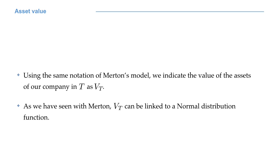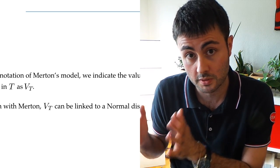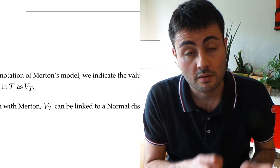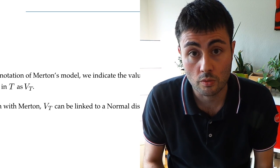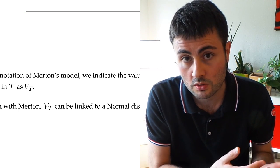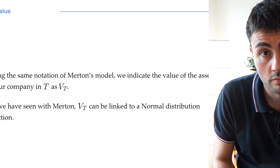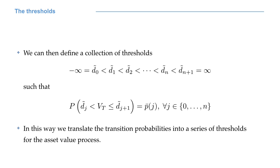Using the same notation we used in Merton's model, with V capital T we indicate the value of the assets of the company at time capital T. If you remember, under Merton's model V capital T is linked to a normal distribution, and we have used the cumulative distribution function to compute the probability of default. We can then define a set of threshold values d0 tilde, d1 tilde, through dn plus 1 tilde, such that d0 tilde equals minus infinity and dn plus 1 tilde equals infinity.